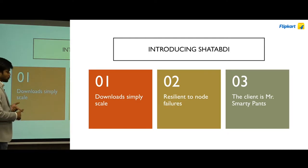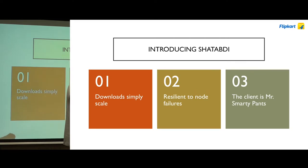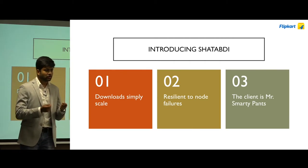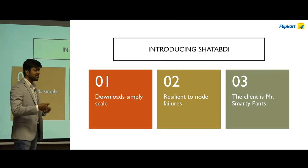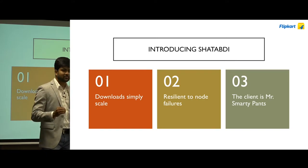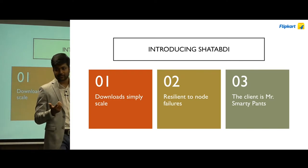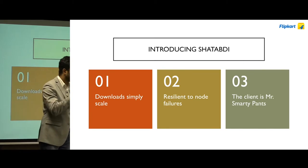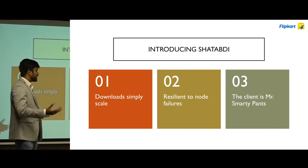Shatabdi is resilient to node failures. If some of the seeders in the network — nodes with all the pieces — were to go down, BitTorrent by design ensures that if at least one seeder is on the network, your torrent can always finish. Shatabdi goes one level further: if all seeders go down, Shatabdi figures out the torrent is unhealthy and that it cannot complete the download. Since Shatabdi knows where the original file is located, it will create a new seeder at that point so the download can finish for everyone involved.